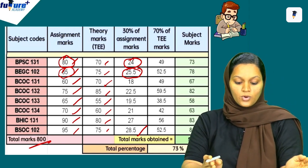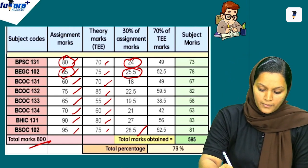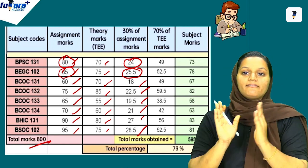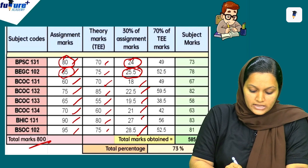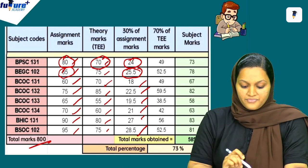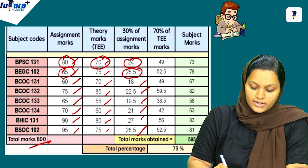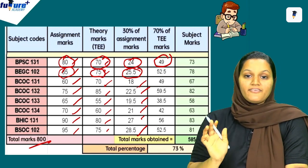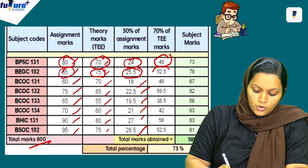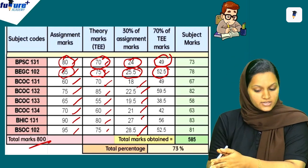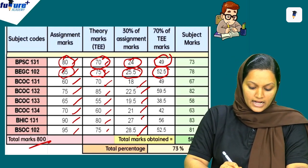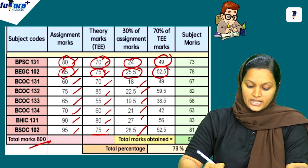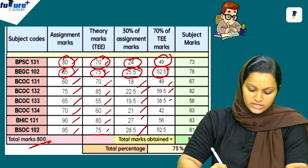Next, we have the 30% assignment score for all papers. The next column is 70% of the TE mark — the theory paper mark. 70% of the theory mark gives 59 for one subject. For 75 marks, 70% gives 52.5. This is clear — this is the 70% calculation for theory paper.